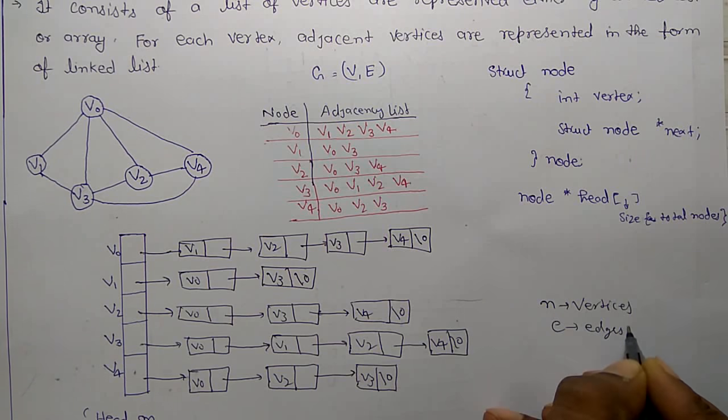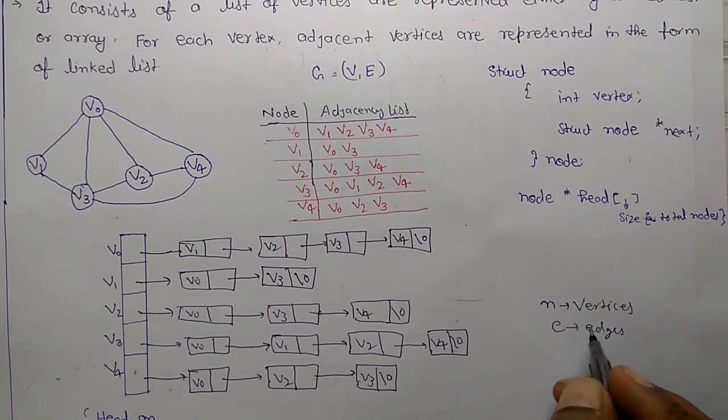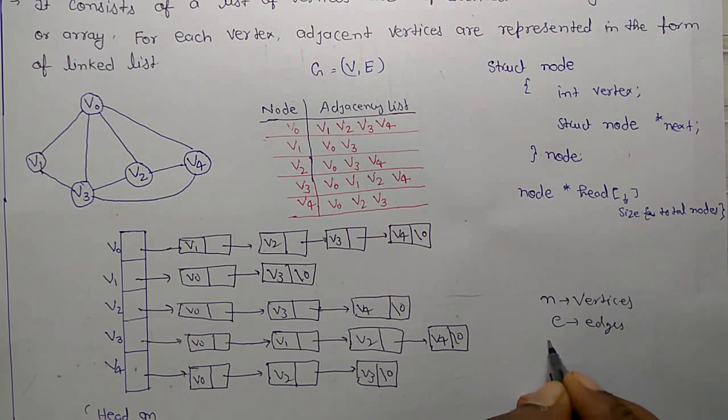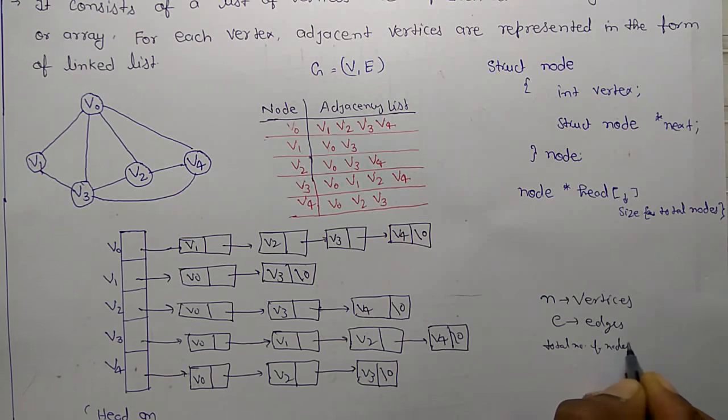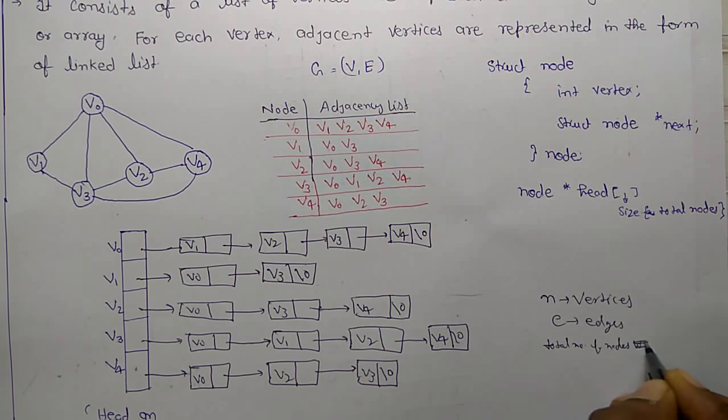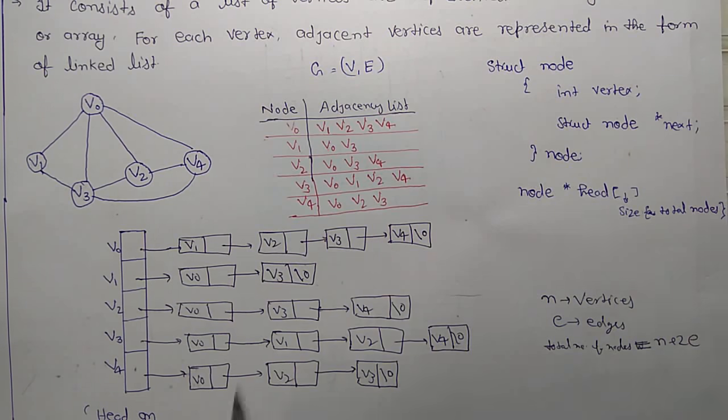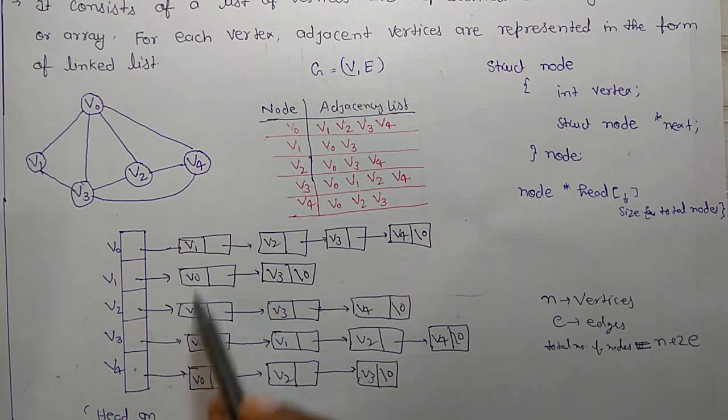the total number of nodes will be equal to n plus 2e. For example, if you count this side linked list we would have 16 and plus 5.